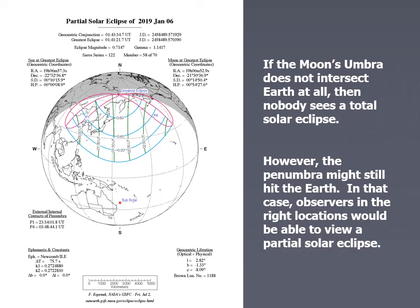Now, sometimes the shadow completely misses Earth, in which case nobody on Earth sees a total solar eclipse. And that would be an example of a partial solar eclipse. There was a partial solar eclipse in January of 2019.